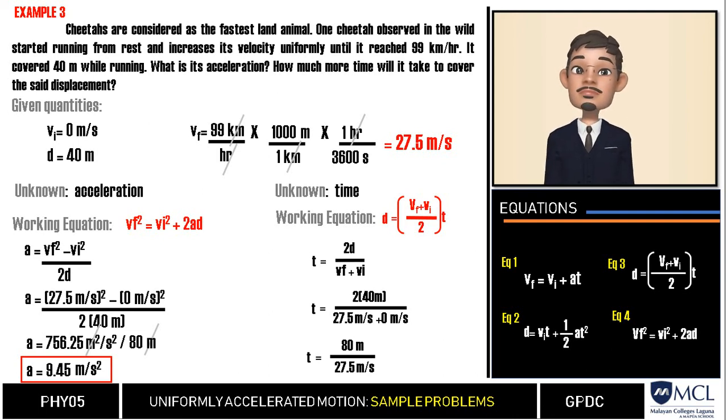Let us perform the operations indicated in this equation. 2 times 40 meters is 80 meters over 27.5 meters per second. We will cancel the meters in our unit and that leaves second, which is the standard unit of our unknown quantity time. We divide 80 by 27.5 and our answer will be 2.91 seconds.